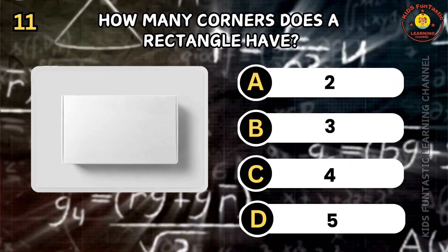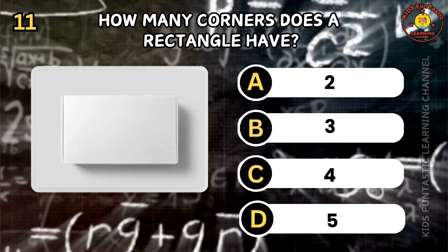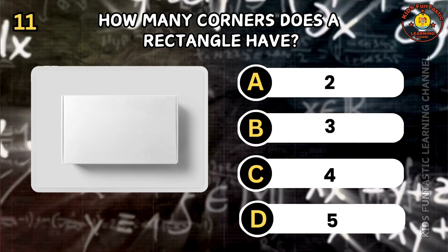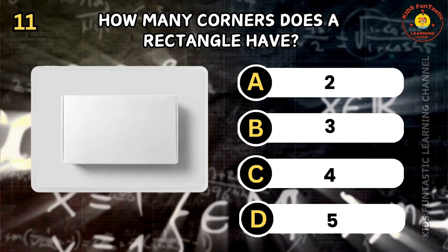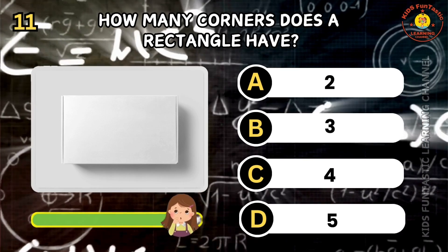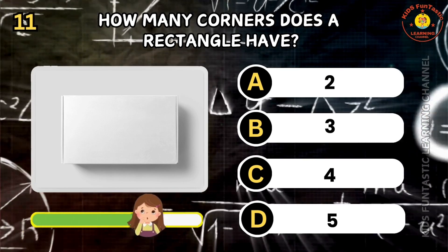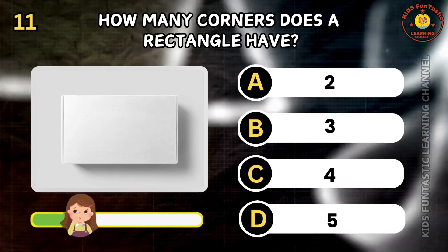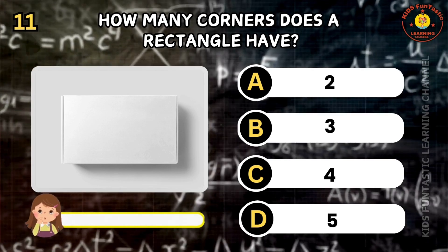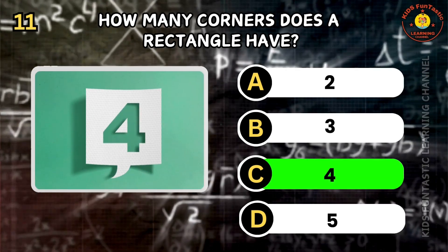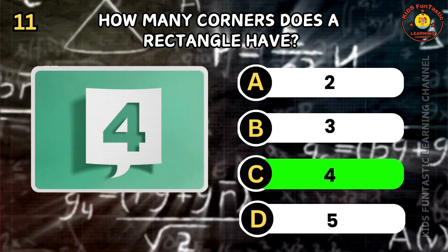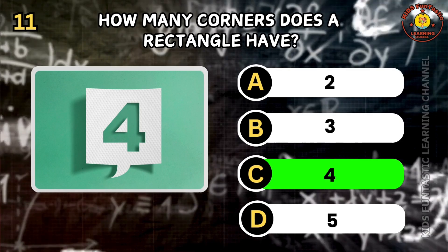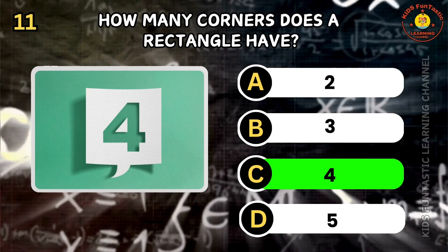Question 11. How many corners does a rectangle have? A: 2, B: 3, C: 4, D: 5. Great thinking! The correct answer is C. A rectangle has four corners.